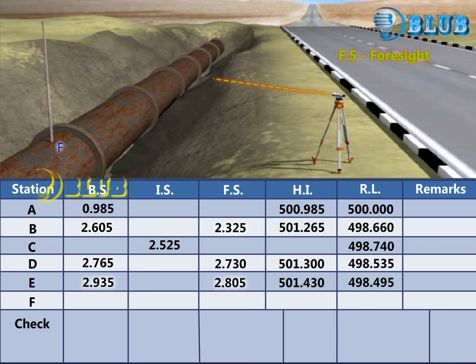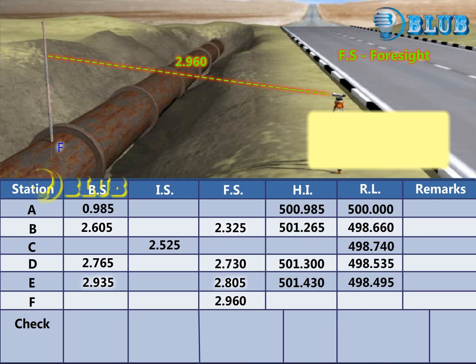Finally, the foresight reading at F is taken. Then subtract the foresight reading from the HI to get the Reduced Level of Point F.